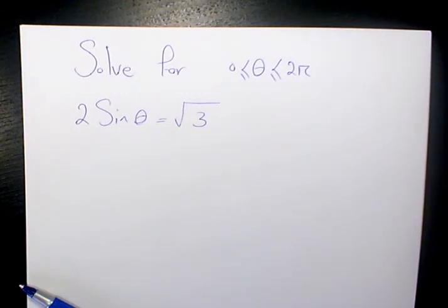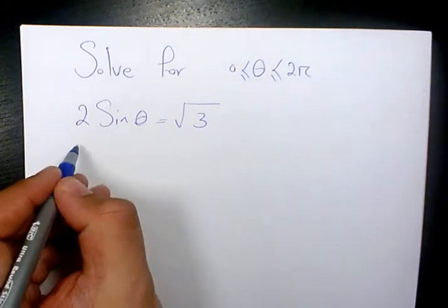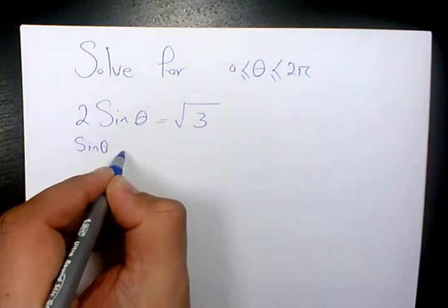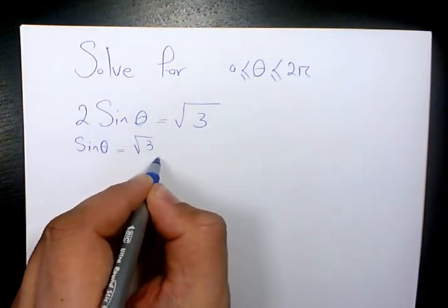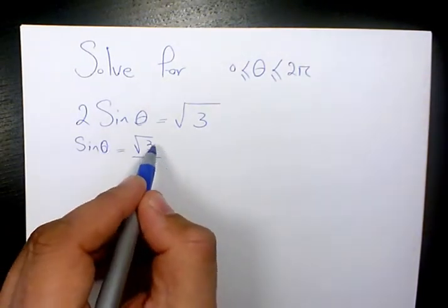In this video I want to solve 2 sine theta equals root 3, and we need to solve it for theta when it is between 0 and 2π. That's not a very hard example. I need to isolate it for sine theta equals root 3 over 2.